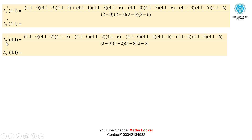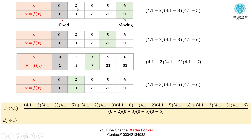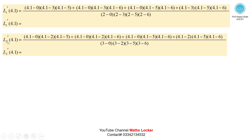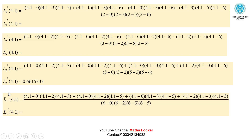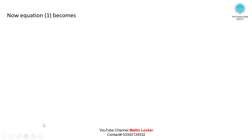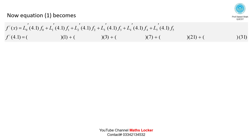Similarly, calculate L2'(4.1) by fixing x2 and using the same procedure. Then calculate L3'(4.1) and L4'(4.1) likewise. Once all values are obtained, substitute them into equation 1 to get the first derivative using the Lagrange interpolation formula.